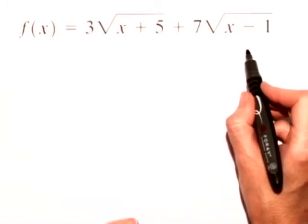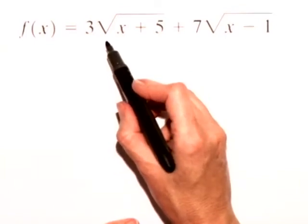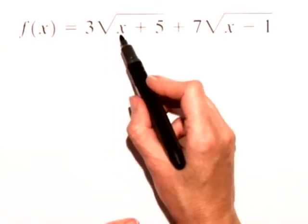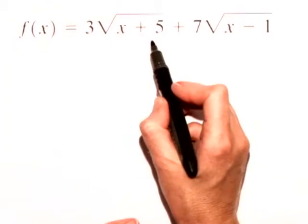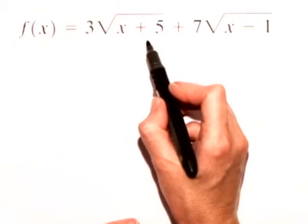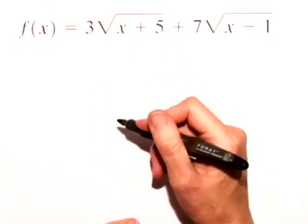Whenever we have an even indexed radical, such as a square root, we need to make sure that whatever we choose under the radical is greater than or equal to 0 so that it produces a real number.